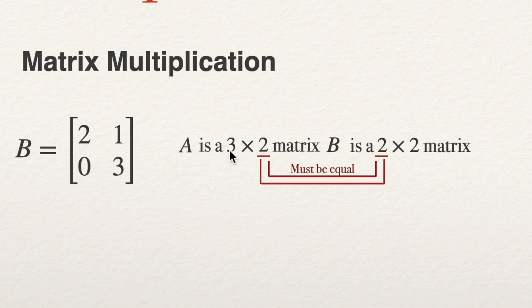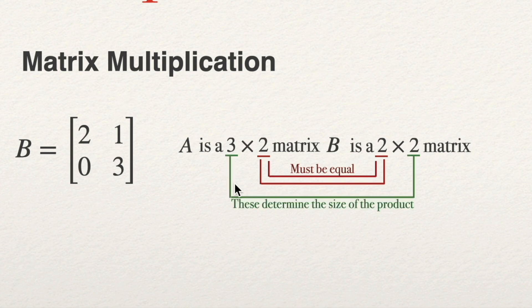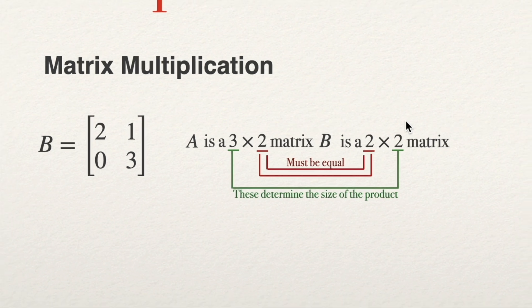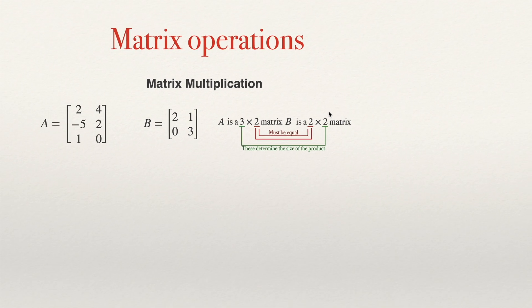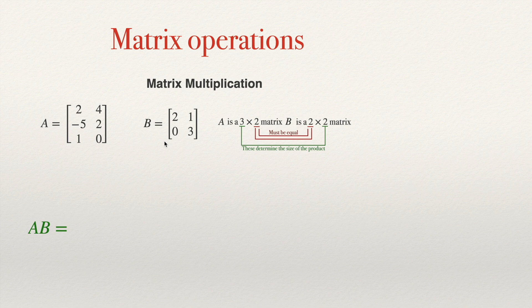The number of rows of the first matrix — this 3 — and the number of columns of the second matrix determine the size of the product. The product will be a 3-by-2 matrix. These two outer numbers tell me the size of matrix AB.